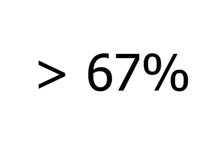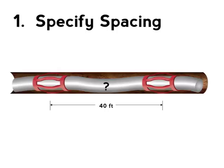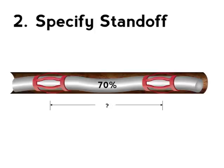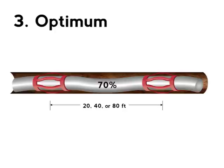Standoff greater than 67% is regarded as satisfactory. There are three methods to design the centralizer placement. The first mode is to let users specify the spacing and the program checks the standoff. The second approach is to let users specify the standoff at the mid-span between the centralizers, and the program calculates the spacing. The third mode is the optimized approach — it specifies the standoff but with incremental spacing.